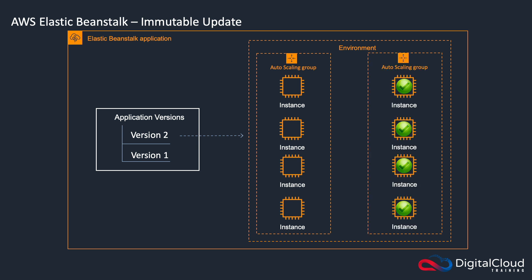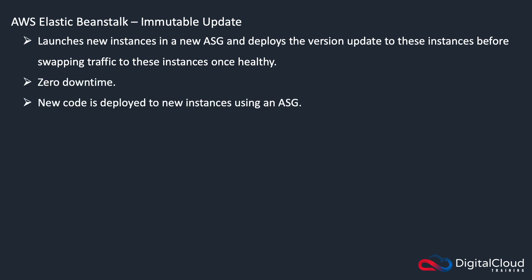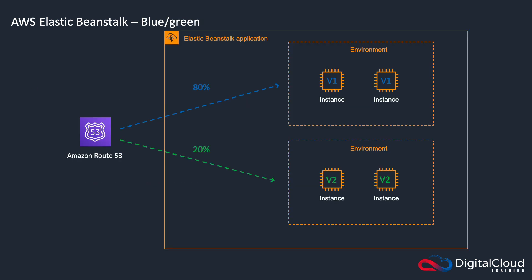We then have an immutable update. In this case, a new auto scaling group is launched and gets updated with the new code. Then you can cut over to that new auto scaling group and remove your existing one. It launches new instances in a new auto scaling group, deploys the version updates, and then swaps traffic to these new instances once they're healthy. There's zero downtime; new code goes to the new instances. This is the highest cost because you have to double the number of instances running for the period of the update, and it can take a long time. But there's a quick rollback in case of failures because you haven't modified your existing instances. Good for production environments.